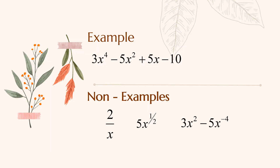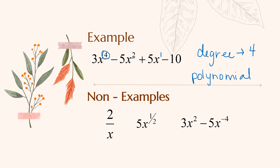For example: 3x to the fourth minus 5x squared plus 5x minus 10. This is a polynomial because it has no division by variables and all exponents are whole numbers — even the exponent on the plain x is 1, we just don't write it. The degree is 4 because that's the highest exponent. The non-examples shown are not polynomials because they involve division by a variable, a fractional exponent, or a negative exponent.